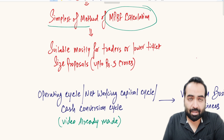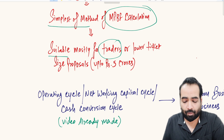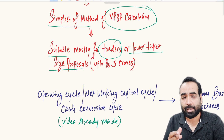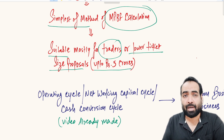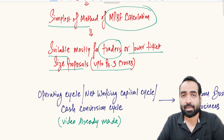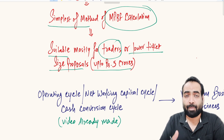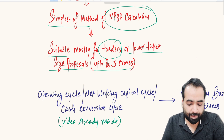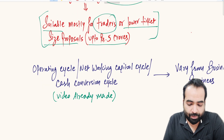This calculation method is suitable mostly for traders — that is one drawback of the method. It is practically used for lower ticket size cases by banks, usually up to 5 crores. Banks with lower risk appetite may use it for up to 1 or 2 crore loan exposure, while larger banks with higher risk appetite can use it for loans up to 5 crores.